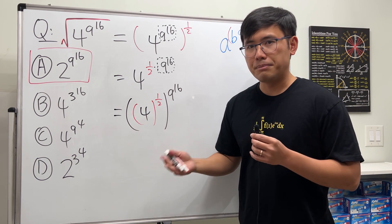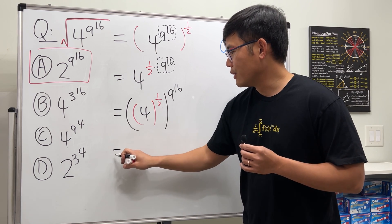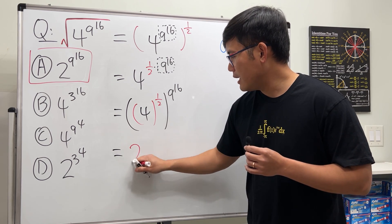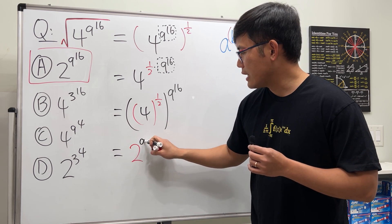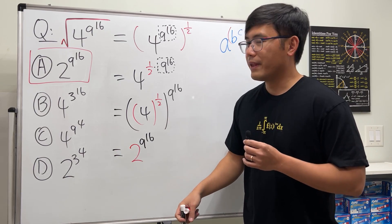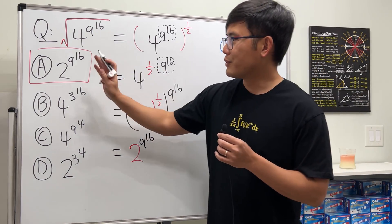So this right here we get 2 for the base and then raised to the 9 to the 16th power. So the best answer right here is of course A.